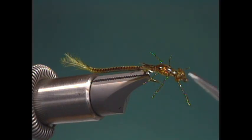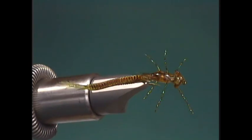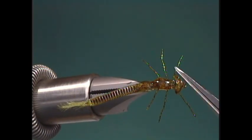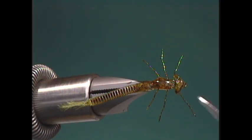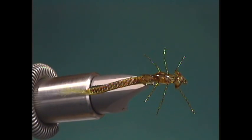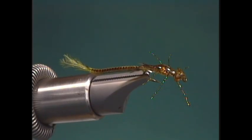These are damsel eyes. What makes them a little bit more unique is if I turn them, you can see how they kind of slant back instead of just one ball of burnt mono. Those again are put out by Umpqua. Now let's tie this little critter.